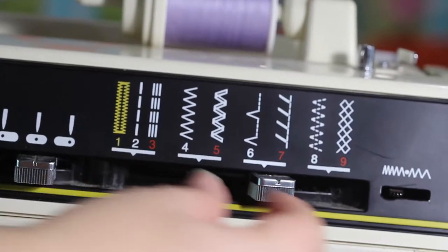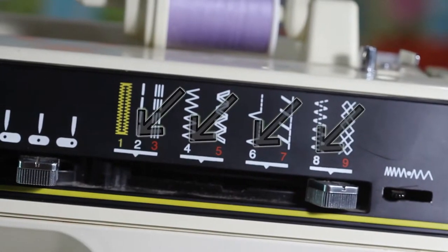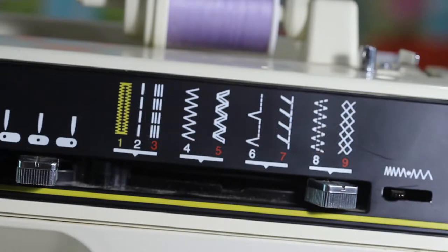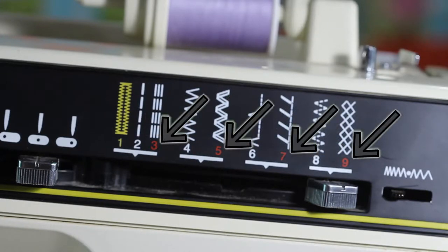If you have your stitch length set to a numeric value, you'll achieve the white labeled stitch, but if you have your stitch length set to the red dot, stretch stitch, you'll achieve the red labeled pattern.